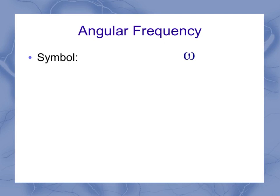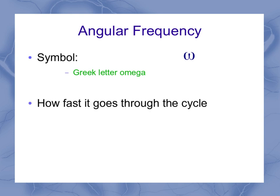Angular frequency: the symbol is omega. Yes, that's the Greek letter omega, not just a W. But its name is not omega. Its name is the angular frequency. And it's really a measure of how fast the oscillator goes through the cycle.